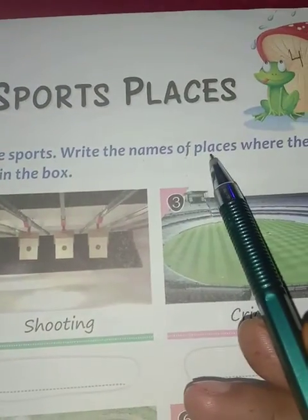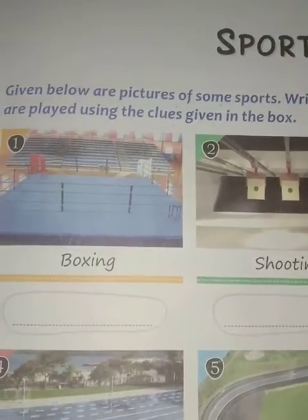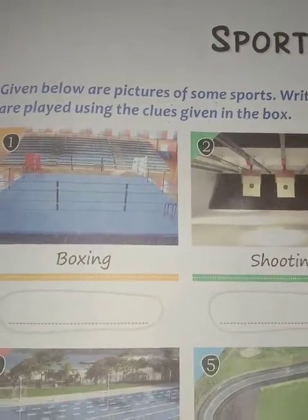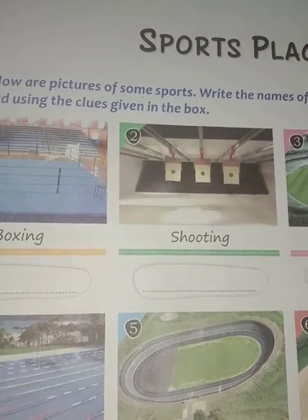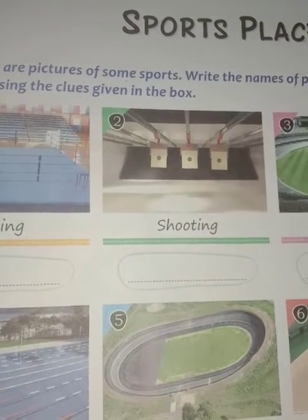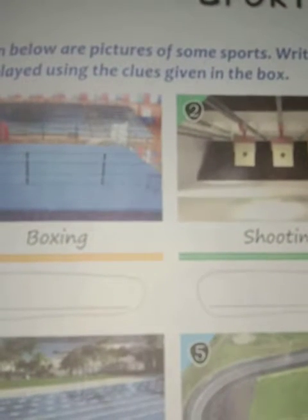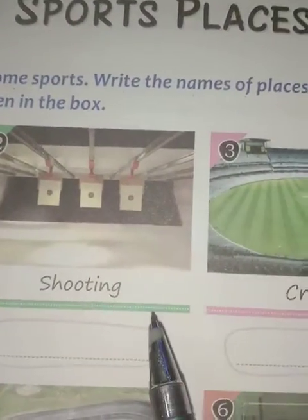First is boxing. Boxing is a combat sport in which two people, usually wearing protective gloves and other protective equipment such as hand wraps and mouth guards, throw punches at each other for a predetermined amount of time in a boxing ring. So where is boxing played? The answer is ring.